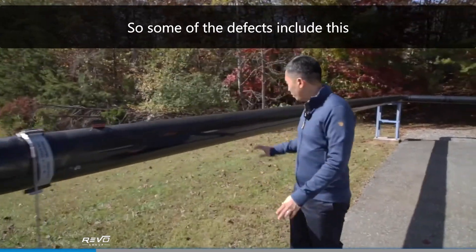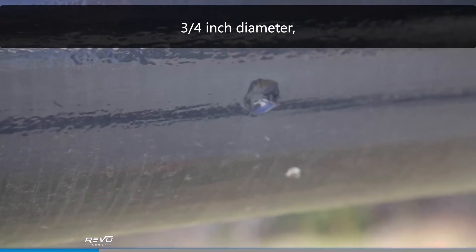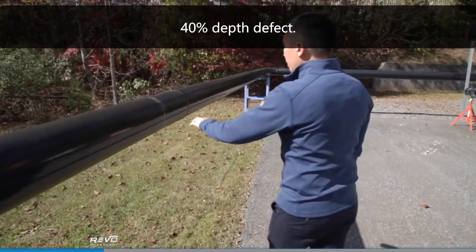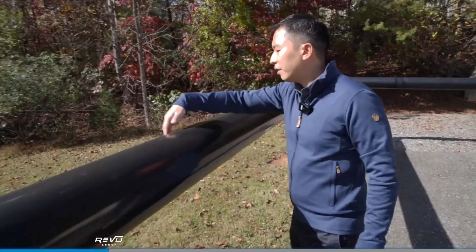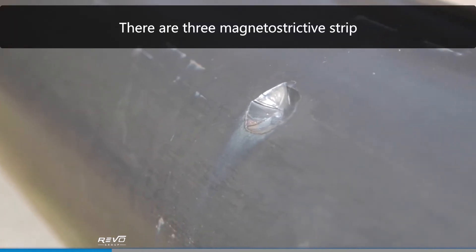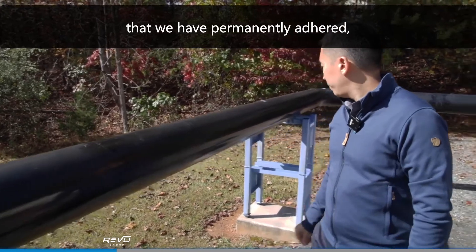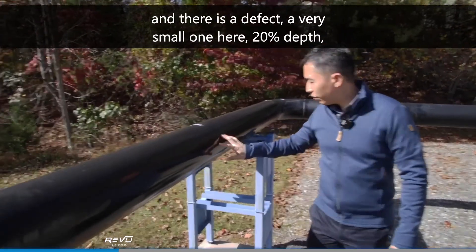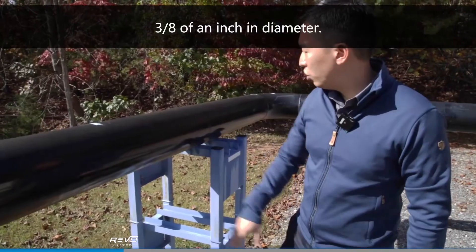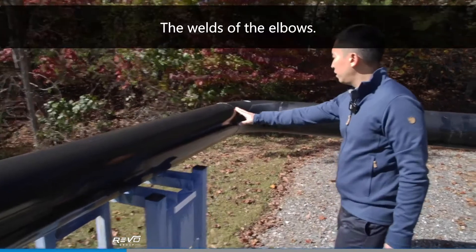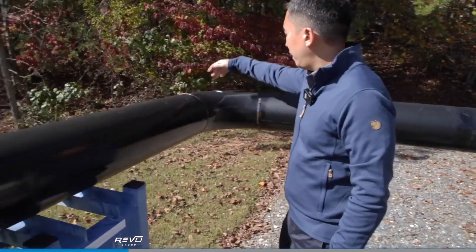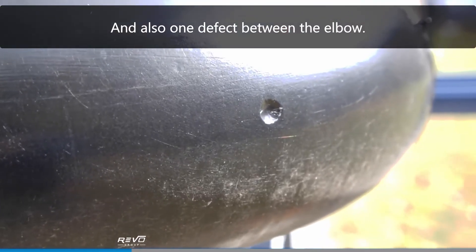Some of the defects include this 3 1/4 inch diameter, 40% depth defect. There is a weld. There is another defect here. There are 3 magnetostrictive strips that we have permanently adhered, and there is a defect, a very small one here, 20% depth, 3 1/8 inch diameter, the welds of the elbows, and also one defect between the elbows.